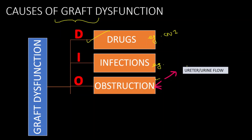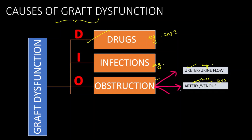Third is obstruction. The obstruction can be in the ureter, obstructing urinary flow and causing graft obstructive uropathy, or surgical-related ureteral stenosis. The obstruction can also be in the artery or vein — renal vein stenosis or transplant renal artery stenosis (TRAS). Transplant renal artery stenosis and transplant renal vein stenosis are usually present in the immediate post-transplant period.